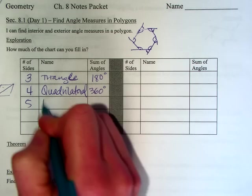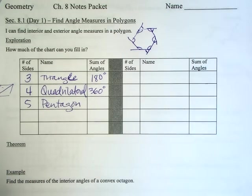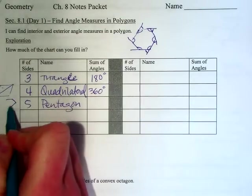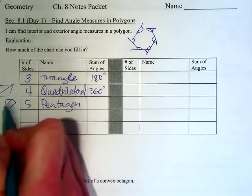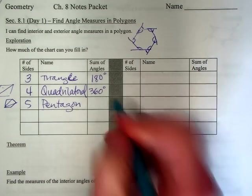Next would be five sides. That's called a pentagon. And if I draw a five-sided shape right here, it's made up of three triangles. So 180 times three, 540.